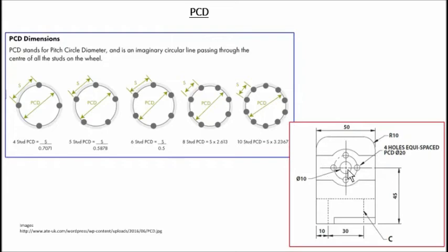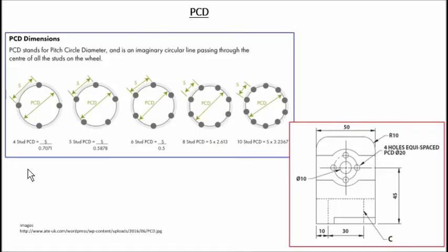This is an actual exam question: it says four holes — one, two, three, four — equally spaced with a pitch circle diameter of 20. That means the distance between one hole and the opposite hole is 20. That is how PCD is applied.